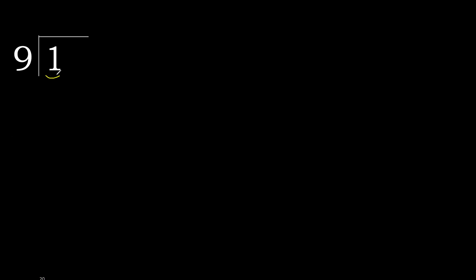1 divided by 9. 1 is less, therefore next. There is no number, therefore complete. Always complete with 0. Here: 0 point.